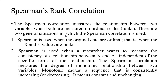The Spearman correlation measures the relationship between two variables when both are measured on ordinal scales. You must remember that data are either ordinal or are not qualifying to be parametric data. There are two general situations when we use Spearman correlation. It is used when the original data are ordinal, that is when X and Y values are ranks — meaning this is number one, this is number two, this is number three.